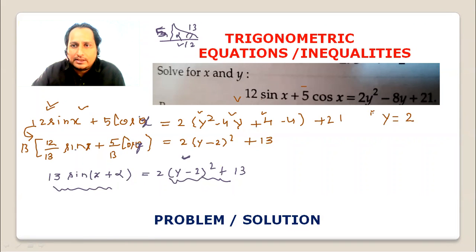When y equals 2, sine of x plus alpha equals 1, where alpha is the angle such that sin alpha is 5 upon 13 and cos alpha is 12 upon 13.